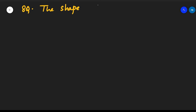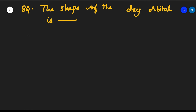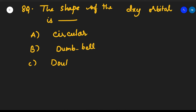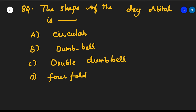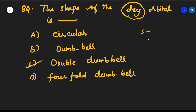The eighth question: the shape of the dxy orbital is? Options: A) circular, B) dumbbell, C) double dumbbell, D) four dumbbell. The s orbital is spherical, p orbital is dumbbell-shaped, and the d orbital is double dumbbell in shape. Since dxy is a d orbital, option C — double dumbbell — is the correct answer.